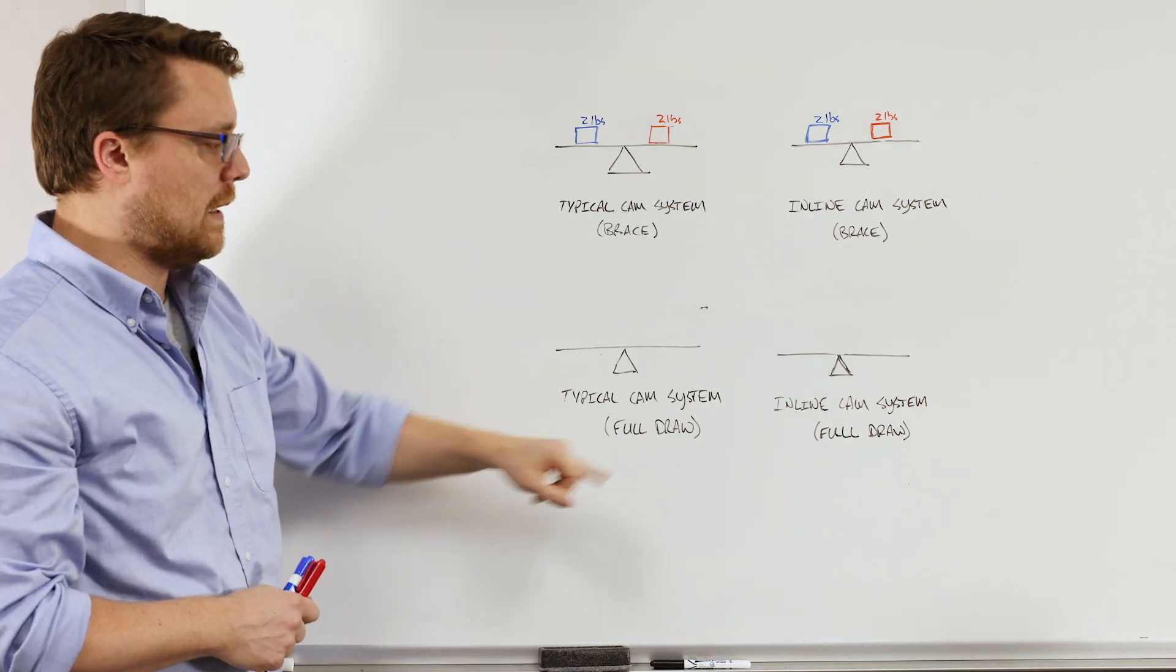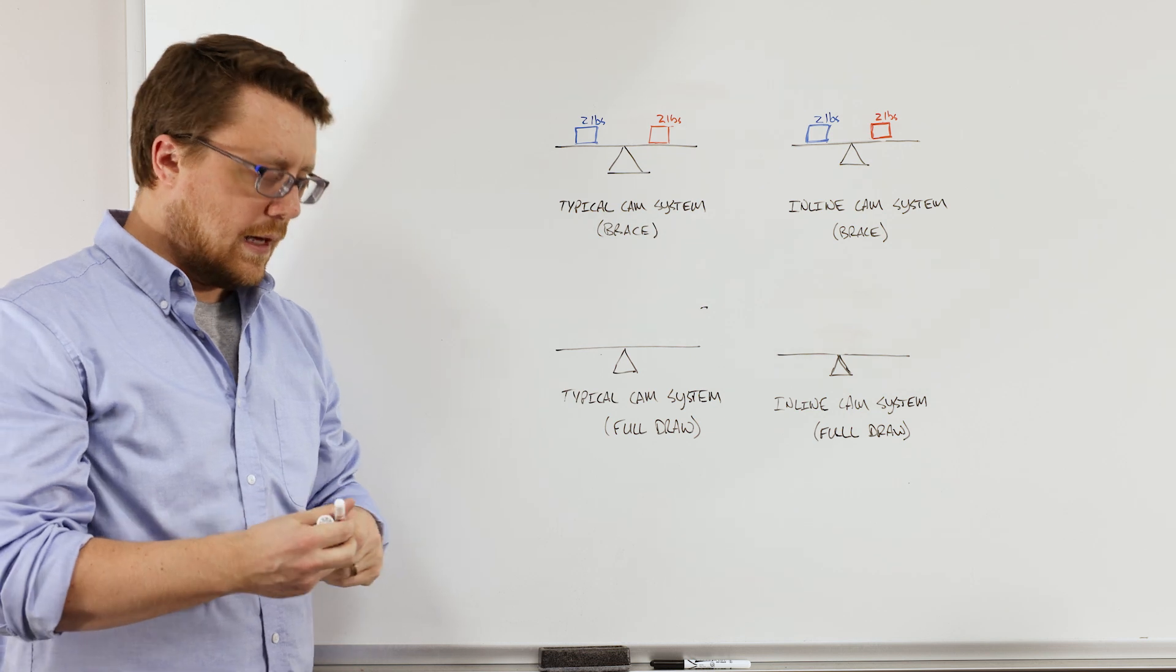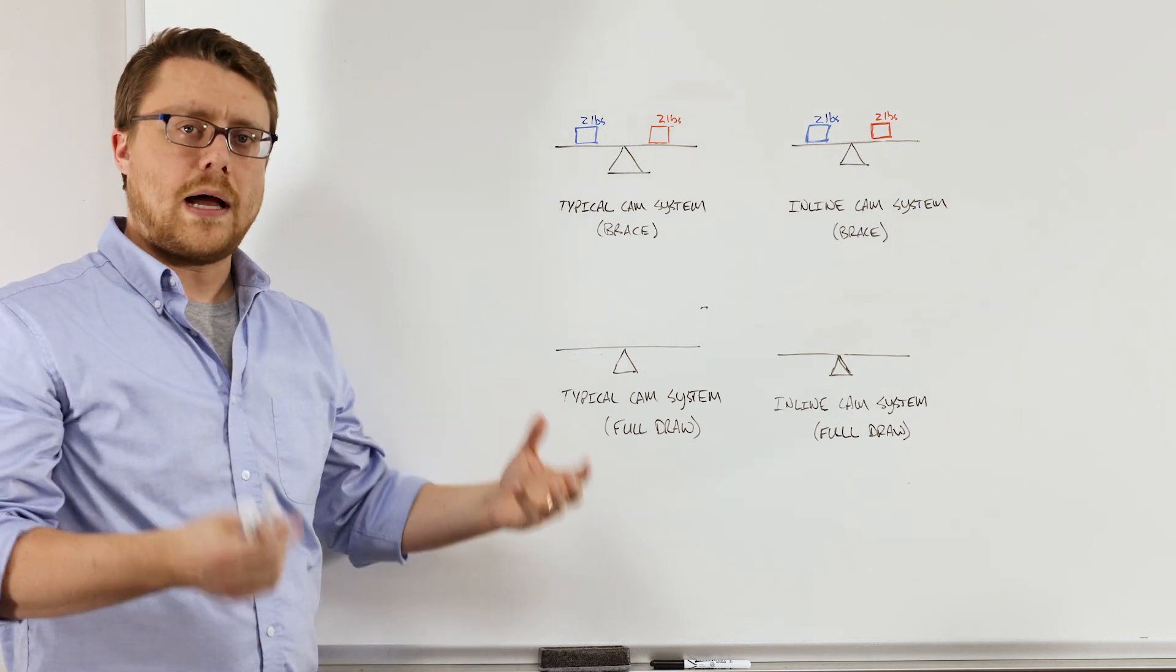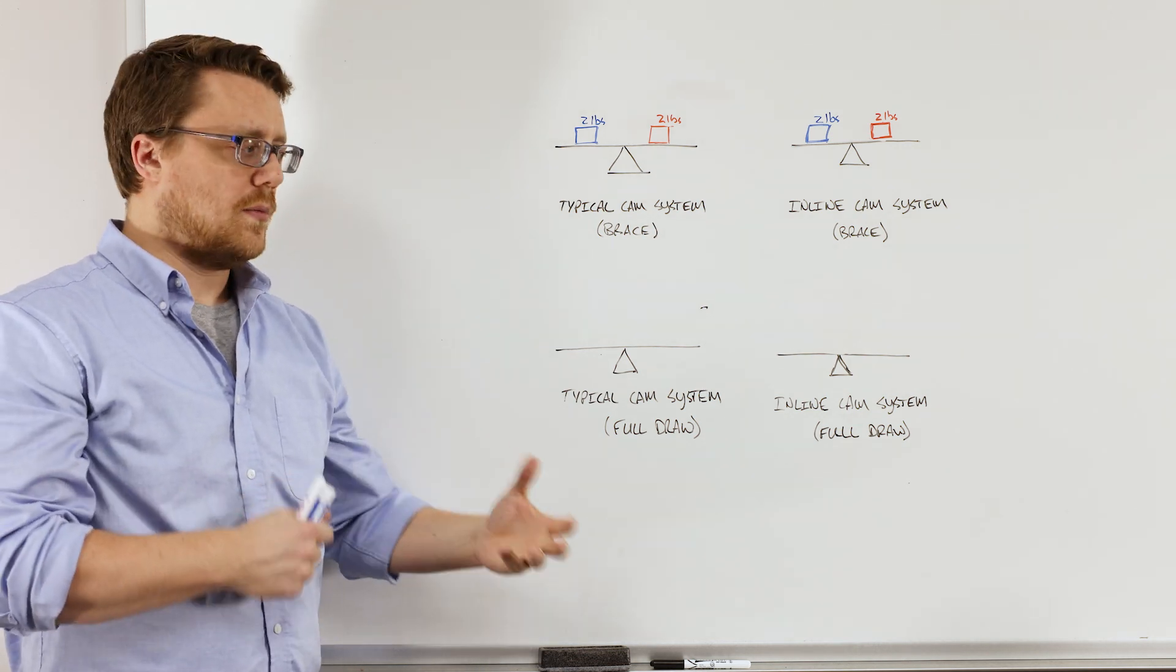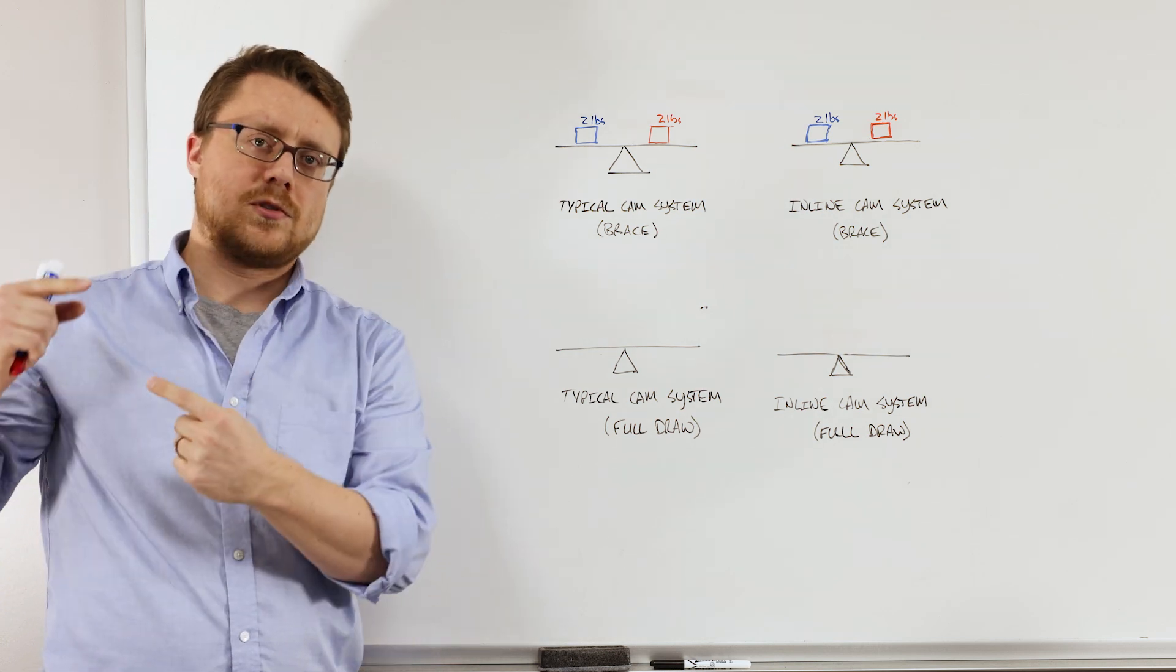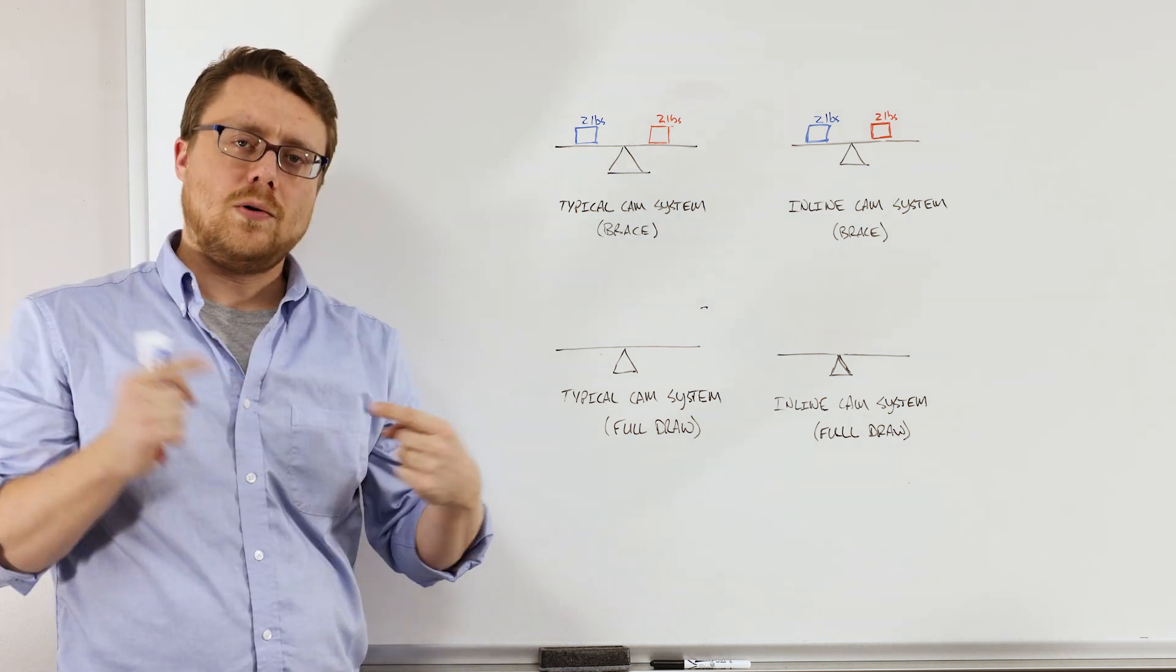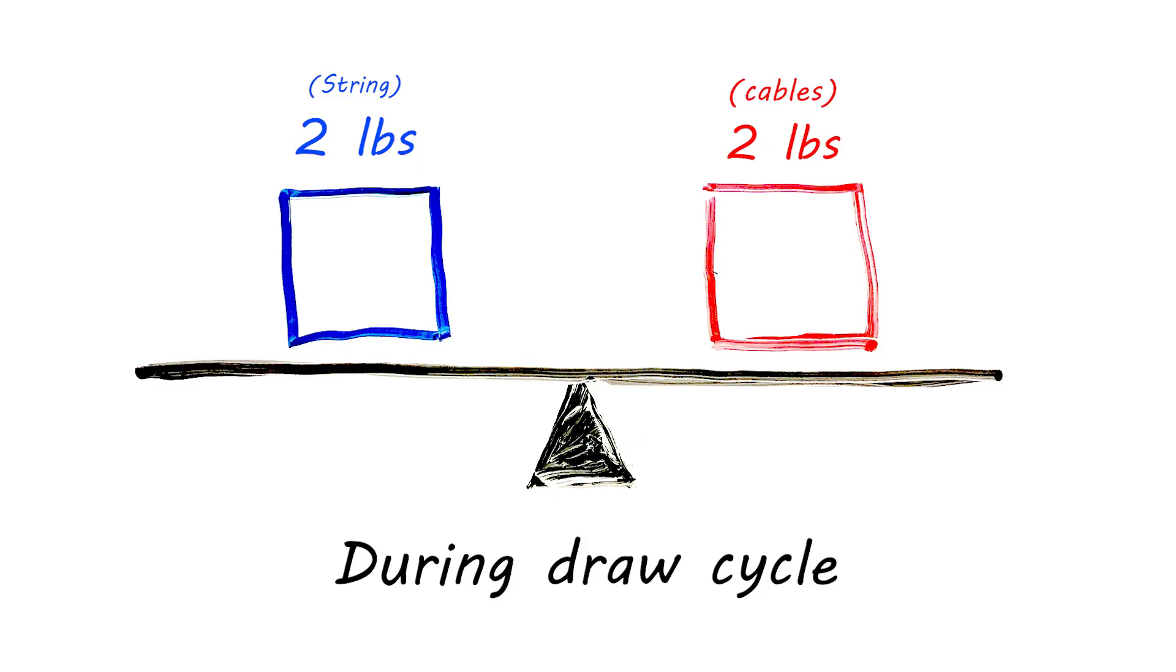The problem, though, is when we start pulling the bow back. In a typical compound bow, as you draw the bow back, the load in the cables starts to go up, and then the load in the string starts to go down. So to illustrate that on our little scale here...